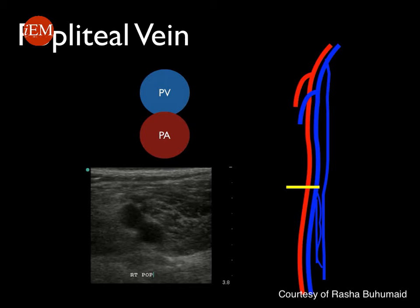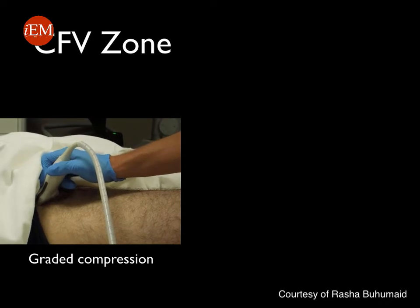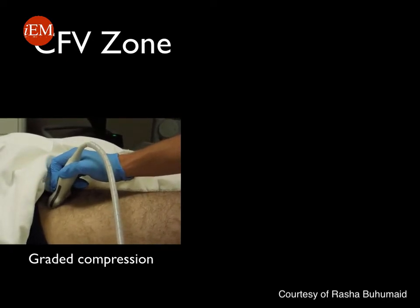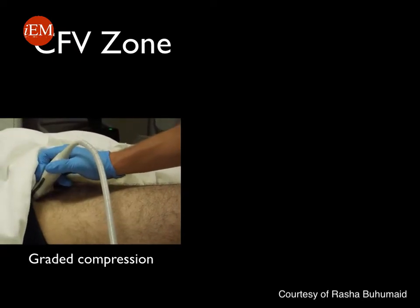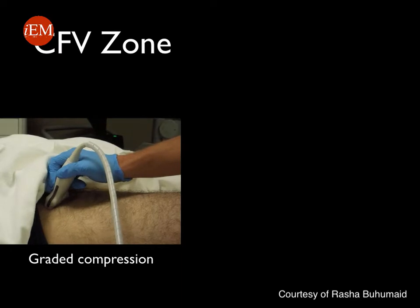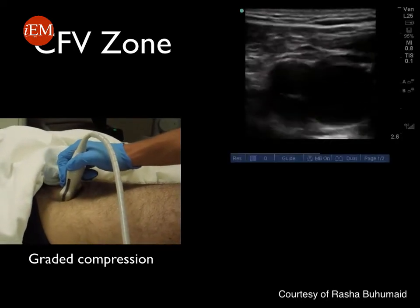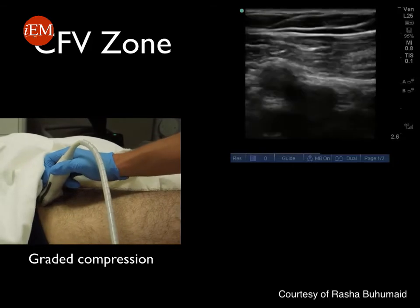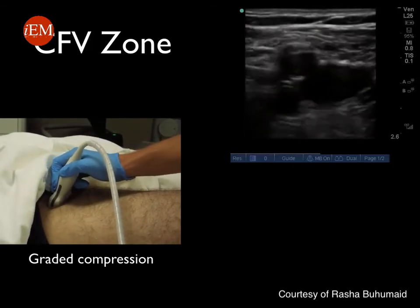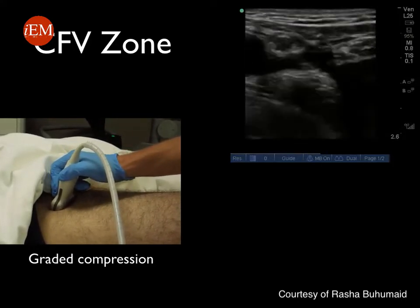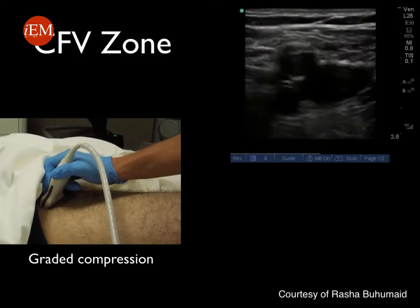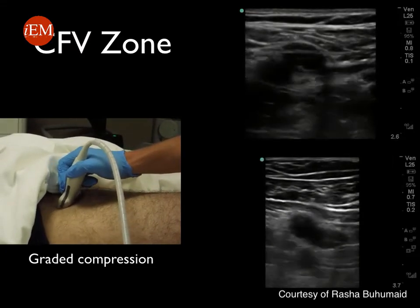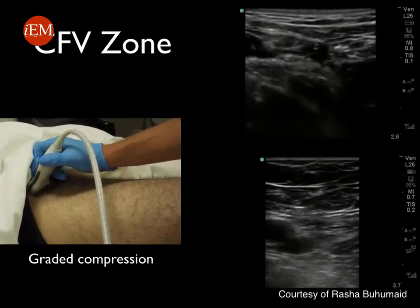All of these veins are evaluated using graded compression. Place the probe at the inguinal ligament with the probe marker towards the patient's right, then evaluate the anatomy and compress the vein with pressure. You want to demonstrate that the walls of the veins are compressible, touching each other — this rules out DVT at that specific location. In this clip you will see that the common femoral vein is nicely compressible, and moving further distally, where it becomes the superficial and deep femoral veins, all segments remain compressible.